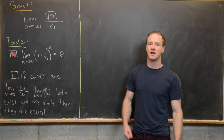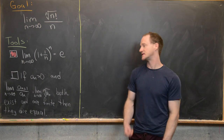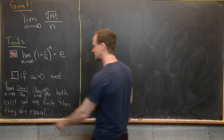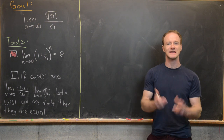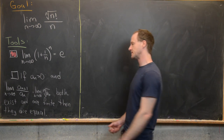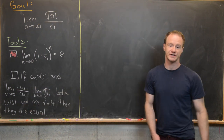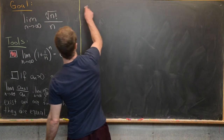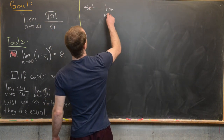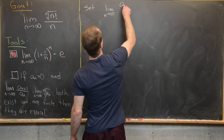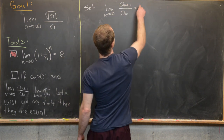Now we've got the first tool taken care of and we're ready for the second, which we'll prove using the epsilon-N definition of a limit and the squeeze theorem. We suppose both limits exist and set the limit as n approaches infinity of a_{n+1} over a_n equal to l.